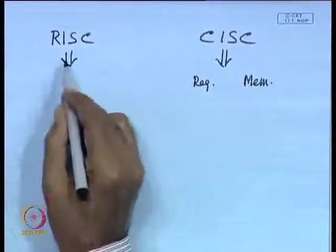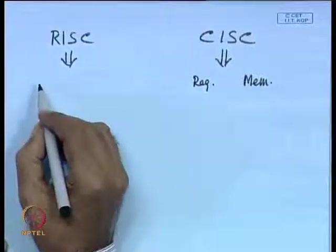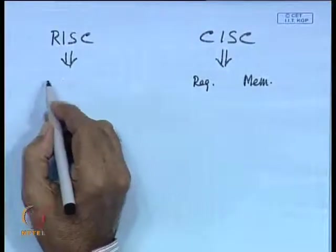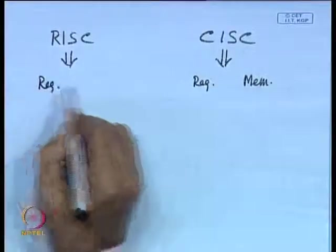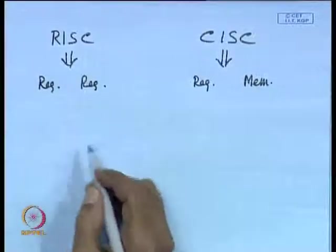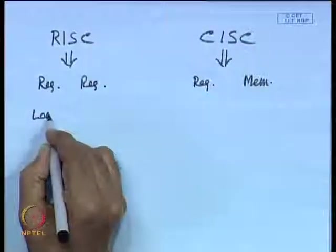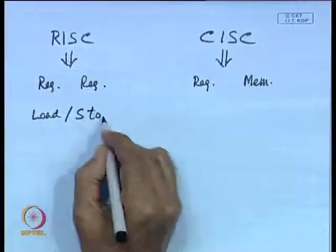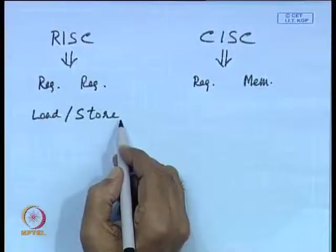In CISC you can perform an ADD operation with the content of a register with that of a memory location, which is not allowed in RISC. RISC processors — Reduced Instruction Set Computers — are based on register-register operations. All ALU operations are performed between register contents and results are also stored in registers. To load registers explicitly, you have load and store instructions — that is why it is also called a load-store architecture.